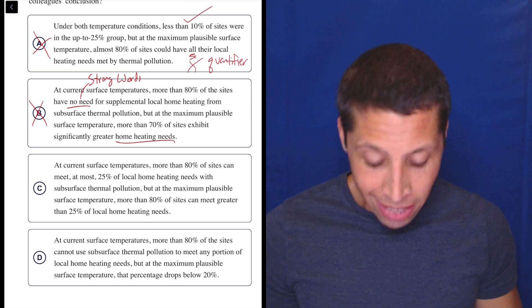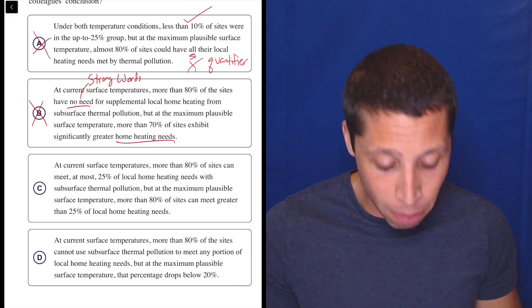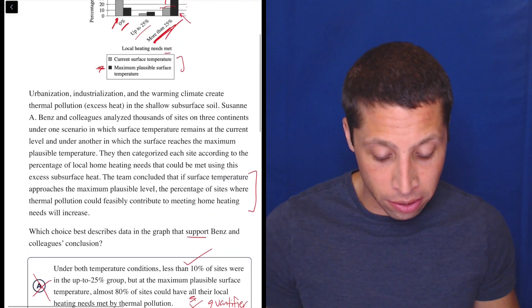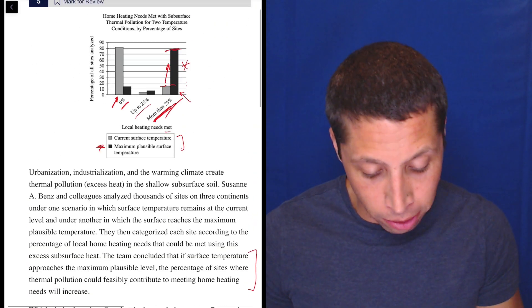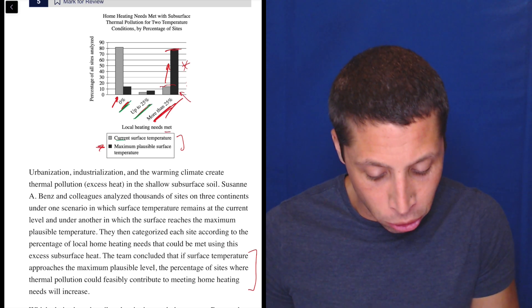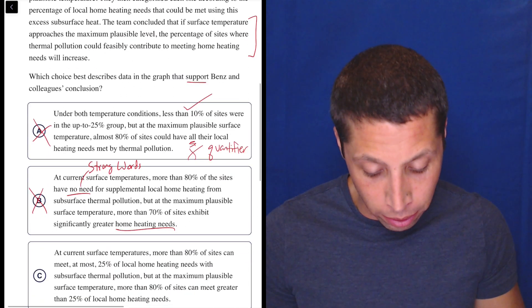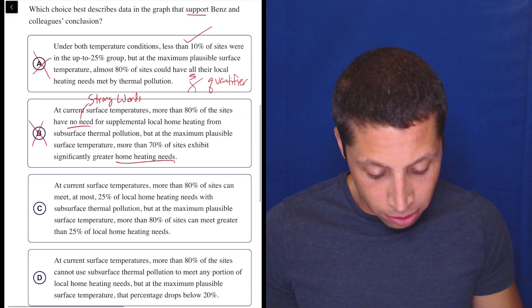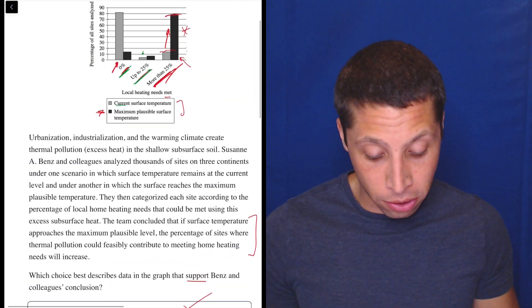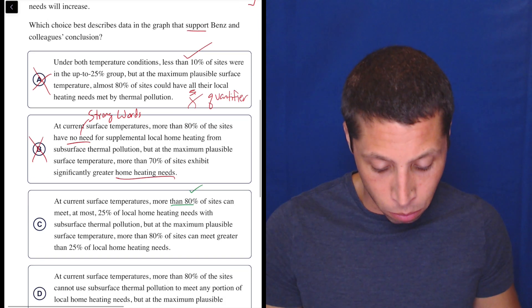It's just saying what percent of their heating needs can be fulfilled by this subsurface soil heat, whatever, right? So it's not like they need more heat. It's just that more of the heat that they need can be provided by the ground, I guess. So this is changing the game. Again, it's not about the chart showing us the wrong numbers. It's about us not knowing what the chart is showing at all. So this is just wrong. It's not what we're getting out of the chart. C: at current surface temperatures, more than 80% of sites can meet at most 25% of local home heating needs with subsurface thermal pollution. So this is the gray bars. Let's switch colors for this. So up to 25% means we're including two groups and at the current temperature. So that's the gray box. It's like 80 and then this extra little bit. So almost 85 or something. So more than 80. Yeah.